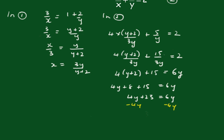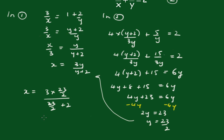And we get the result that 2y equals 23, and y equals 23 on 2. So now we can substitute this back into here, so we get x equals 3 times 23 over 2 over 23 over 2 plus 2, and that when you work that out in your calculator comes out to 23 over 9.